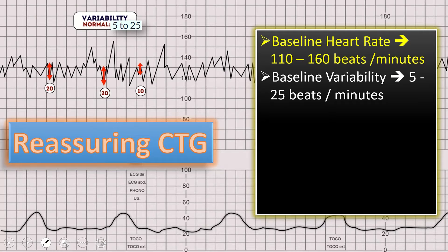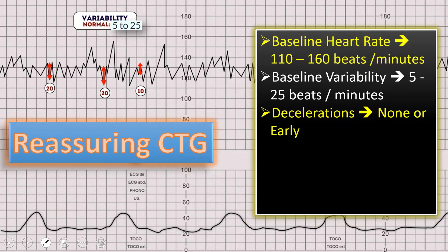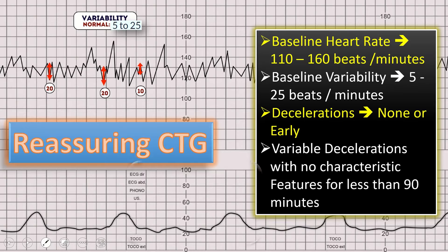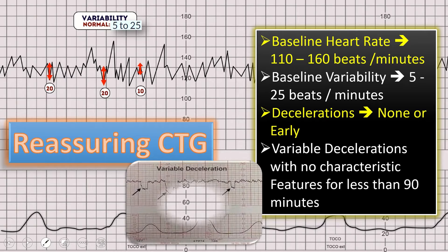Decelerations should not be present in reassuring CTG, but if we do find decelerations, those should be early. If early decelerations are present, that is also a reassuring sign. If we find variable decelerations but with no characteristic concerning features for less than 90 minutes, that is also included in reassuring CTG.